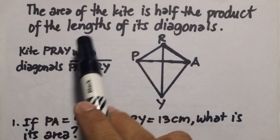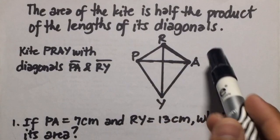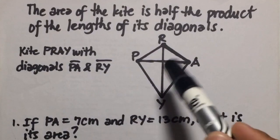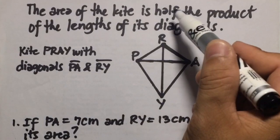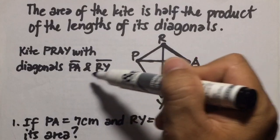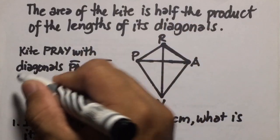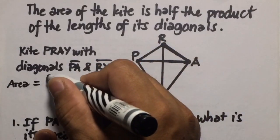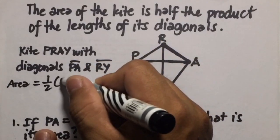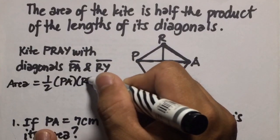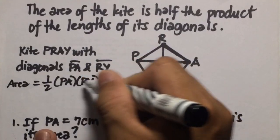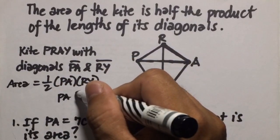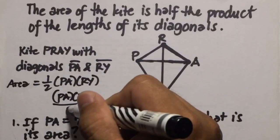Second theorem: the area of the kite is half the product of the lengths of its diagonals. We have here kite PREY with diagonals PA and RY. So the area of the kite equals one half of PA times RY, or PA times RY divided by 2.